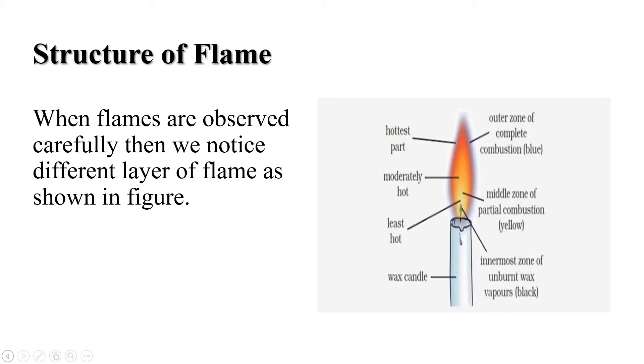And students, now let us understand the structure of flame. A flame consists of four zones and these are: first, the outermost non-luminous zone of complete combustion; second, central or middle luminous zone of incomplete combustion; third, inner dark zone of no combustion; and the fourth, lowest blue zone. So let us understand about these zones in detail.